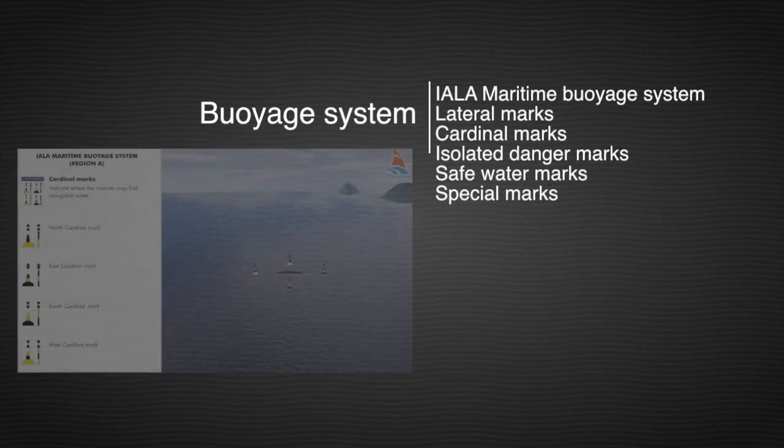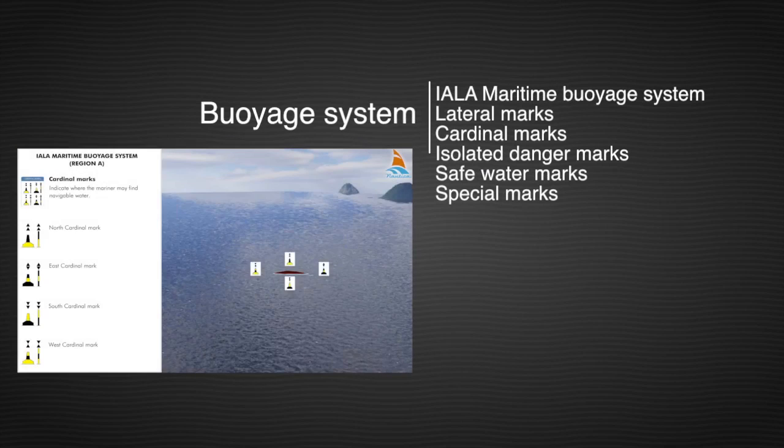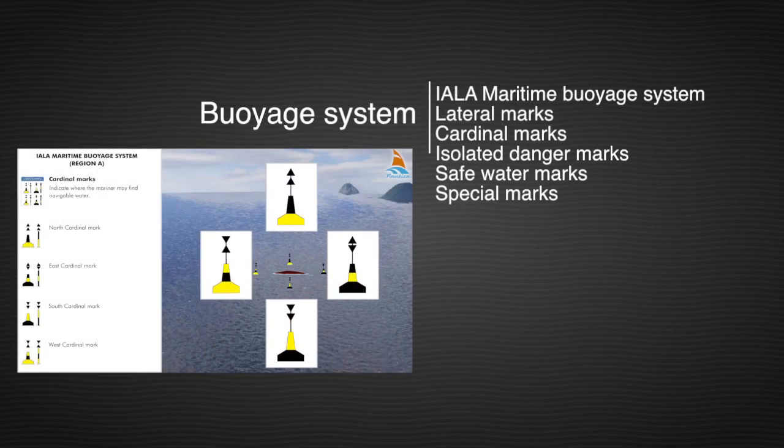Buoyage system. To memorize the colors of the cardinal marks, associate the black color and the points of the double cone top mark.